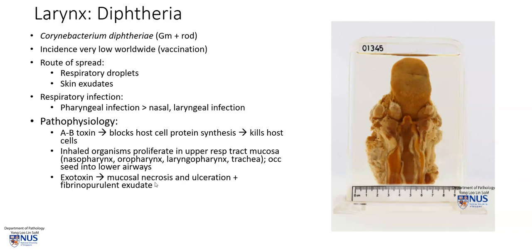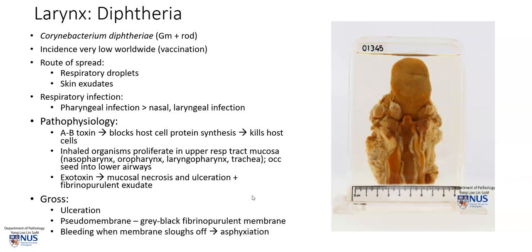The exotoxin causes mucosal necrosis and ulceration, plus this thick, dense fibrinopurulent exudate. So grossly, there will be ulceration of the mucosa, but we will usually see this grayish or yellowish fibrinopurulent heavy membrane that is stuck down to the mucosa in the structures of the pharynx — for example, the tonsils and the nasopharynx — and also sometimes, as we saw in this case, the laryngeal structures. When the membrane sloughs off or is scraped off, the underlying tissues will be ulcerated, bleeding, and swollen due to edema, and this can also potentially lead to airway obstruction and asphyxiation.